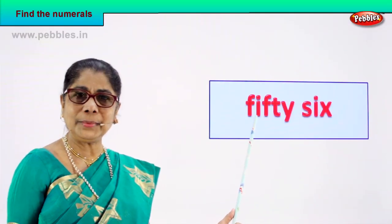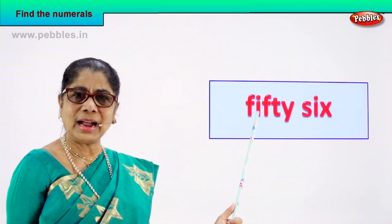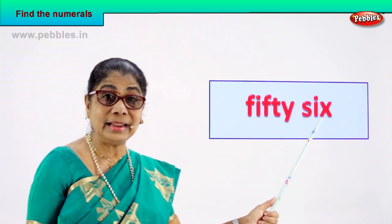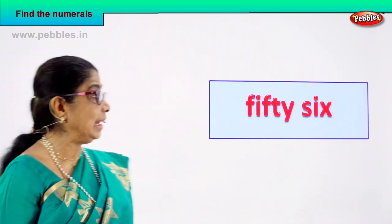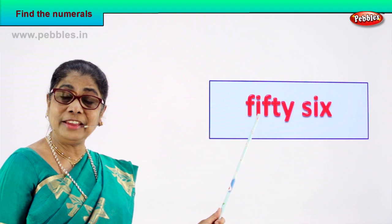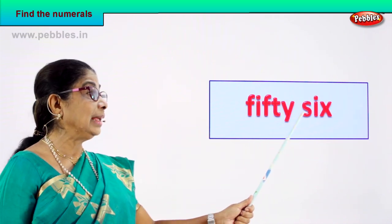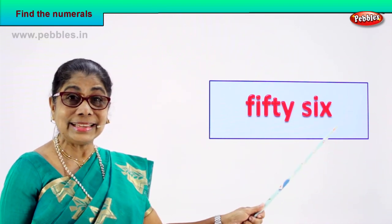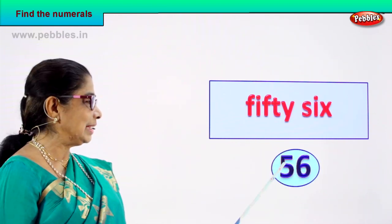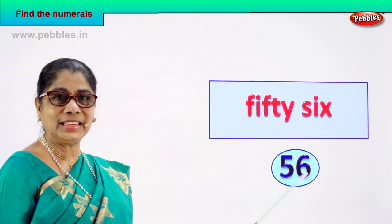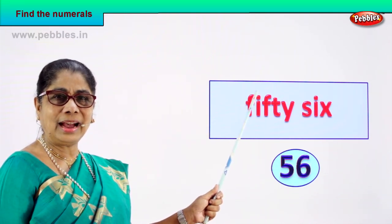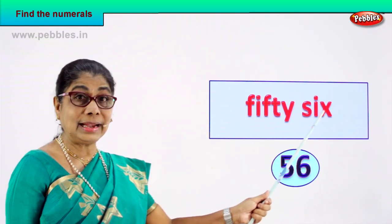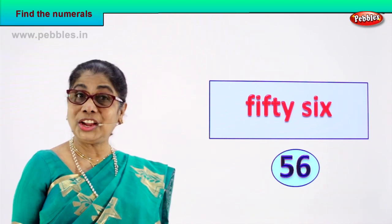Let's take the next number name. Read with me: F-I-F-T-Y, 50, S-I-X, 6. Read again — F-I-F-T-Y, 50, S-I-X, 6. So the numeral is 56 — 5 and 6. You spell it: F-I-F-T-Y, 50, S-I-X, 6. The numeral is 56 — 5 and 6.